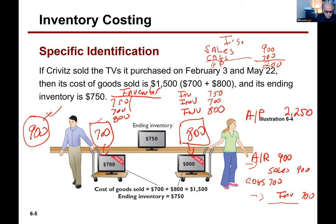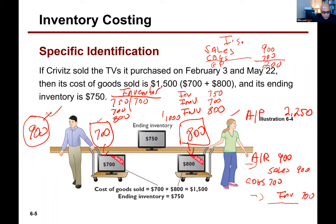So we have this gross profit of $200. Now, what happens when she buys another TV? Let's say she pays $1,200 for it. It's a fancier TV. When it costs the company — the TV dealer — $800, what would be the journal entry? Sell it to her for $1,200.